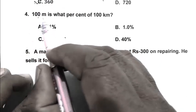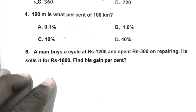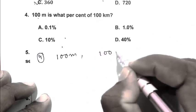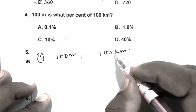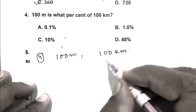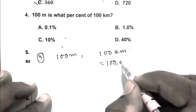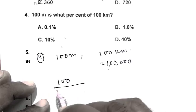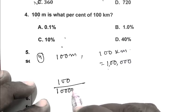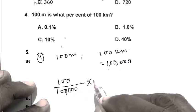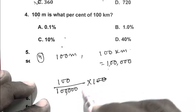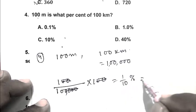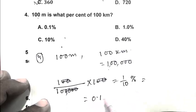Question number 4: 100 meters is what percent of 100 kilometers? So friend, first write 100 meters and 100 kilometers. We convert kilometers into meters, so it becomes 1,00,000 meters. So 100 upon 1,00,000 into 100, that is 1/10 percent, which is 0.1 percent. So A is the right answer.